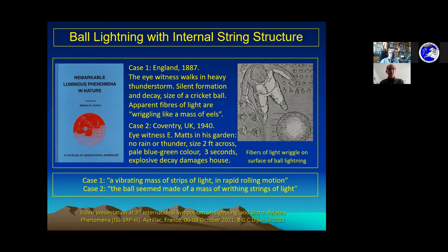The sentence that touches on my presentation is 'a vibrating mass of strips of light in a rapid rolling motion.' This is important for my talk. My talk will deal not with the variety of properties but just with two ball lightning observations. Really, the second description is the balls seem to be made of a mass of writhing strings of light.